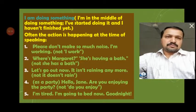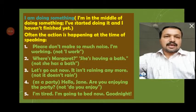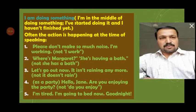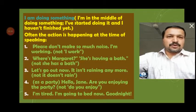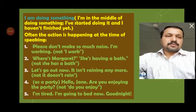When I say 'I am doing something,' it means that at the time I make that statement, I am in the middle of doing it — I have started doing it and I haven't finished it yet. So far it is not completed; it's going on. So present continuous tense is used to talk about things that are happening at and around the present time.